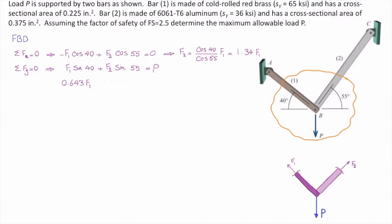So, sine of 40 is 0.643 times F1. Sine of 55 is 0.819 multiplied by F2. And that would be equal to P. I will plug F2 from the top equation to this.